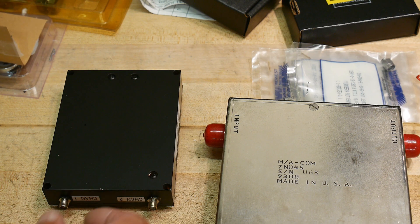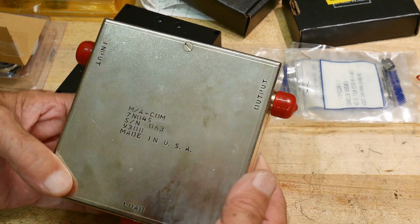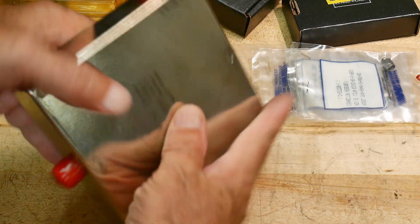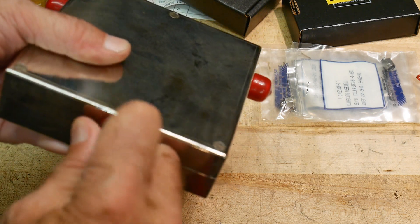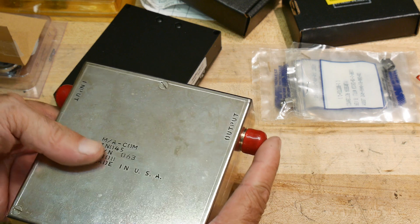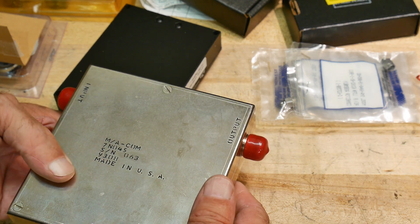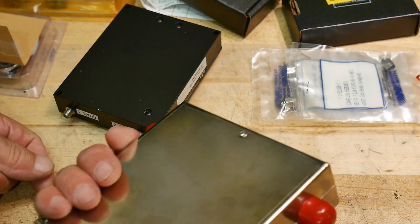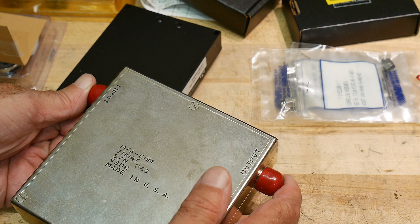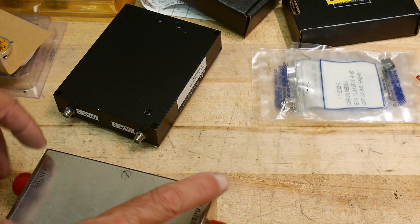And I believe, believe it or not, I believe this is a circulator. I believe it's a giant, giant. So it's very heavy. It's very, very heavy. So it must have a giant magnet in it and it's, N connectors. So, input, output, and load. Wow. Wow. Oh, man. This must have been a pretty penny. MAKOM. Very, very cool. So, yeah. So maybe a circulator video. That'll be really, really cool.